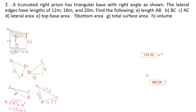Truncated right prism with triangular base with right angles shown. This is a triangular base: 10 meters, 90 degrees, 10 meters, 12 meters, with slant heights of 12, 16, and 20. Since the bases are not parallel, this is a truncated right prism with triangular base. We need to find the dimensions: lengths of EB, EC, BC, and the top area EBC.